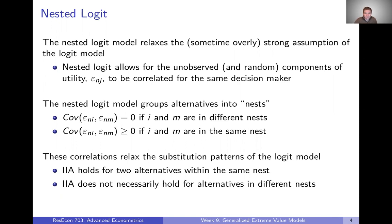We actually estimate the extent to which those unobserved utility terms are correlated with one another. Allowing for these correlations relaxes the restrictive substitution patterns we got from the logit model. In fact, IIA is going to hold for two alternatives within the same nest, but IIA will not necessarily hold for alternatives in different nests. So instead of assuming IIA holds for every set of alternatives across the board, we now get some different substitution patterns.